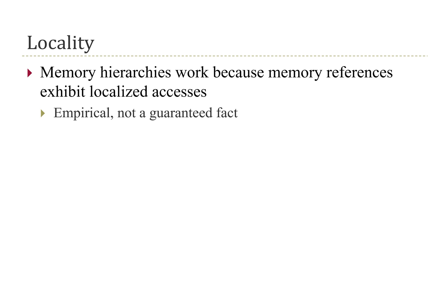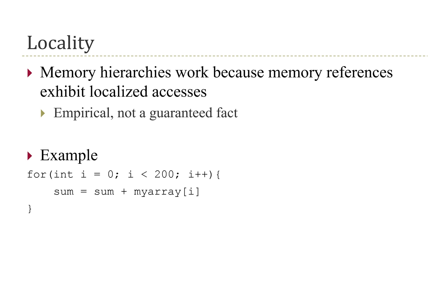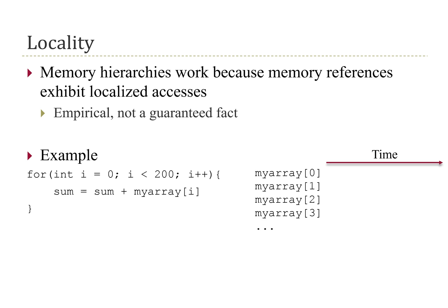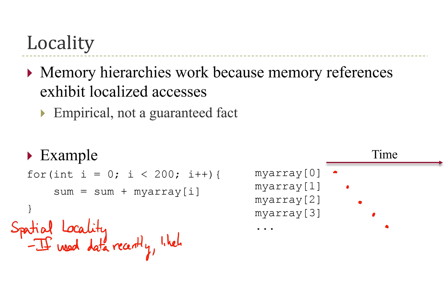As an example of what locality is, here we have a simple piece of C code that sums up all of the values in an array. If we look at how this program accesses values in memory over time, the first iteration through the loop it accesses my_array[0], then a bit later my_array[1], then my_array[2], then 3, and so on. This example shows what is referred to as spatial locality — if you have used data recently, you are likely to use data close to it soon as well.